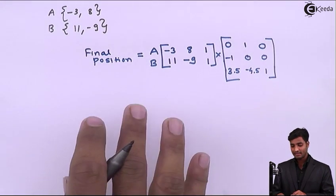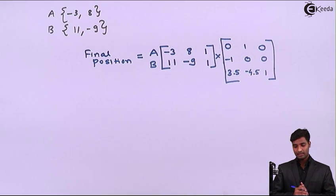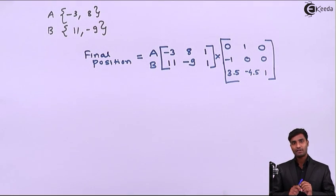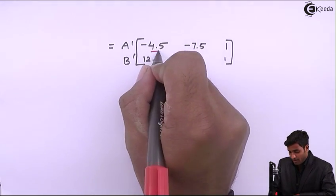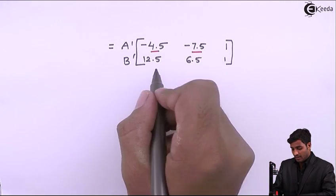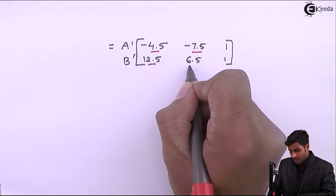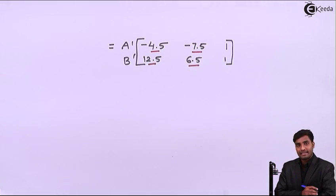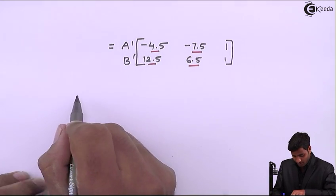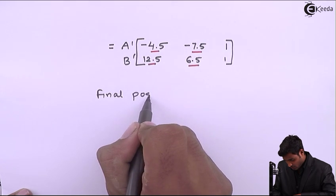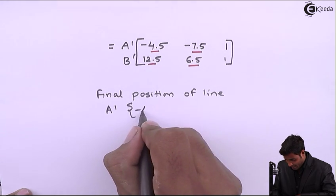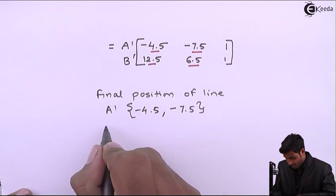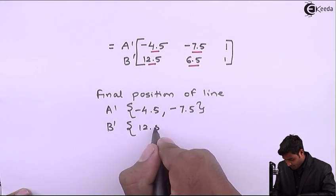After multiplying these two matrices, the final position of the line is: A' = (-4.5, -7.5) and B' = (12.5, 6.5). So the final position of line AB after 90° counterclockwise rotation about its midpoint is A'(-4.5, -7.5) and B'(12.5, 6.5).